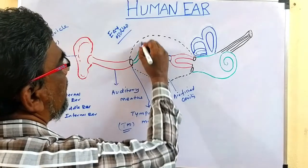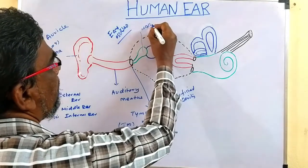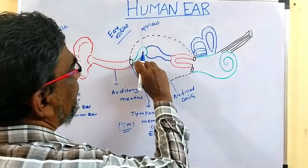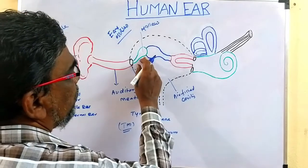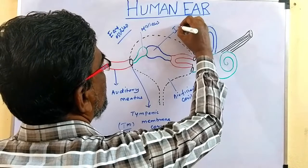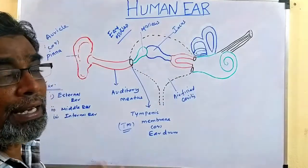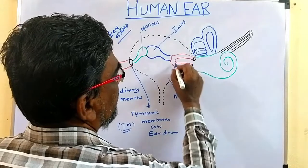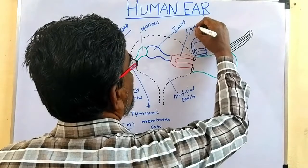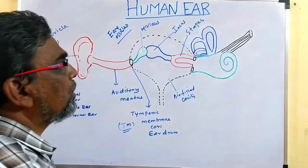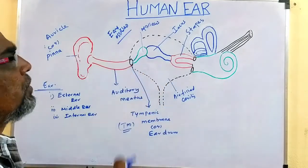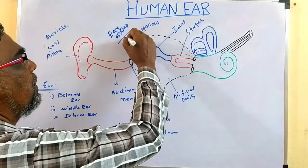The first ear ossicle is called malleus. Very close to it and attached to malleus is a second bone called incus. The third bone, the red curved part, is called stapes. Malleus, incus, stapes — these are the three bones collectively called ear ossicles.